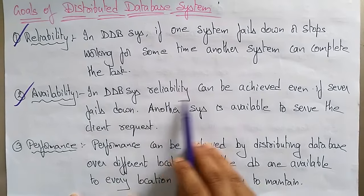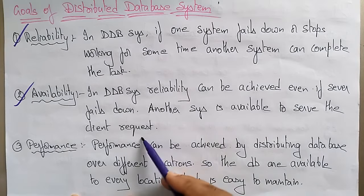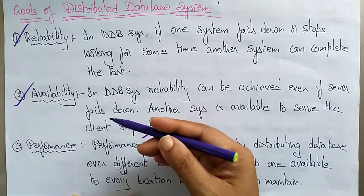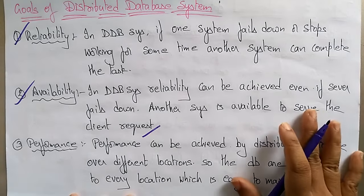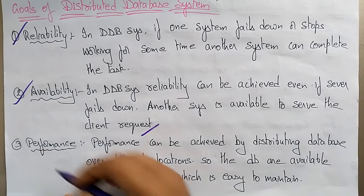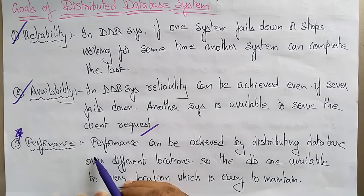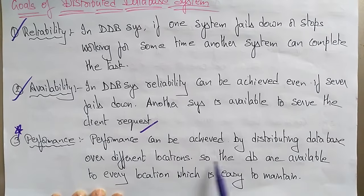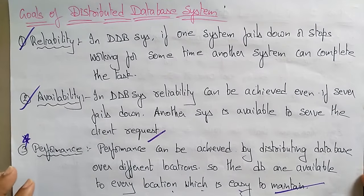The second goal is availability. Even if a system fails, another system is available to serve client requests. The third goal is performance. Performance can be achieved by distributing the database over different locations, making the database available at every location, which is easy to maintain. These are the goals of a distributed database system.